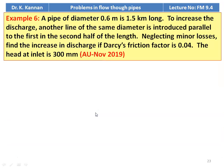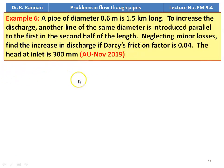Example number 6 from November 2019 question paper. A pipe of diameter 0.6 meter is 1.5 kilometer long. To increase discharge, another pipeline of the same diameter is introduced parallel to the first in the second half of the length. Neglecting minor losses, find the increase in discharge if Darcy's friction factor is 0.04. The head at the inlet is 300 millimeter.